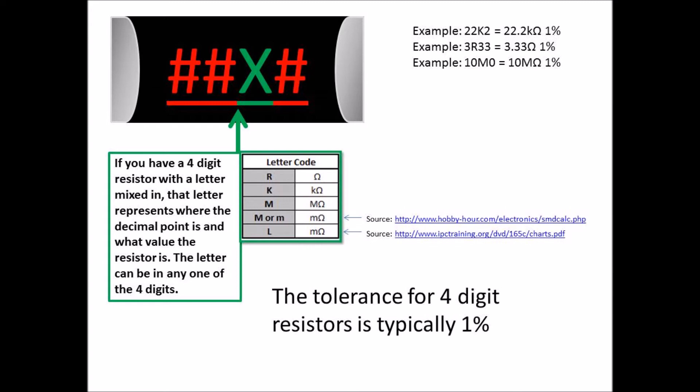And then I'll show the other two sources that show something a little different. The example I give is 22K2, which would be 22.2 kilohms, 3R33, which equals 3.33 ohms, and 10M0, which would be 10 megaohms.